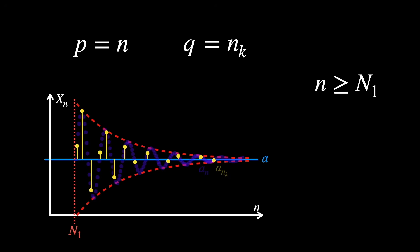The index n to be big enough for the Cauchy property. The subsequence index n sub k to also be big enough for the Cauchy property. And lastly, the position k in the subsequence to be big enough for the convergence part.